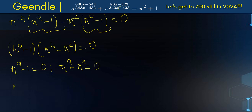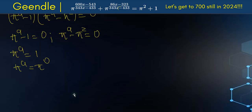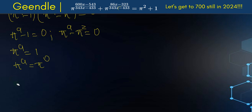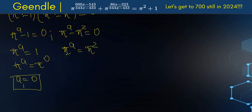From the factored form we get π to the A minus 1 equals 0 and π to the A minus π squared equals 0. So π to the A equals 1, which means π to the A equals π to the 0, giving A equals 0. And π to the A equals π squared gives A equals 2. So a1 equals 0 and a2 equals 2.